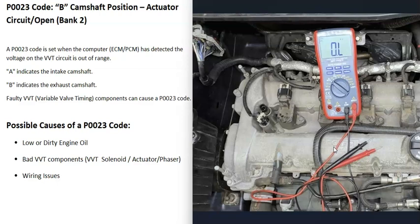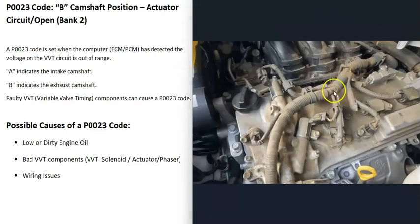You can check solenoid B on the bank 2 side of the engine with a multimeter. Check the windings inside the solenoid using ohms, look up the rated ohm value for that specific solenoid, and see if they match. If the windings are burnt out or open, the solenoid is bad. If that solenoid tests good, the next step is to check the wiring going to it.